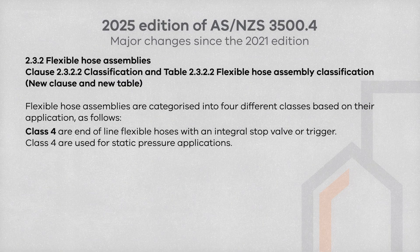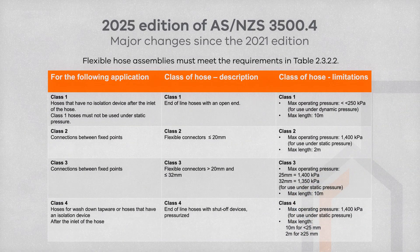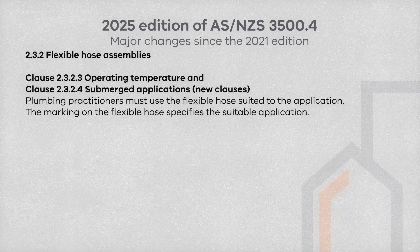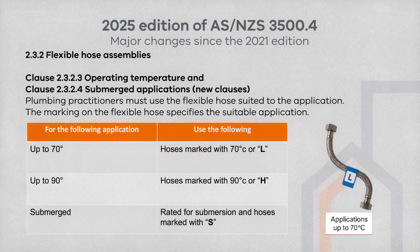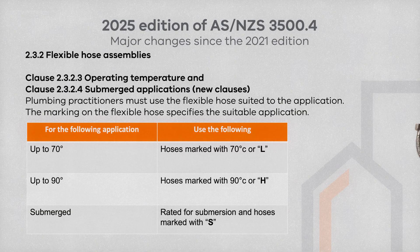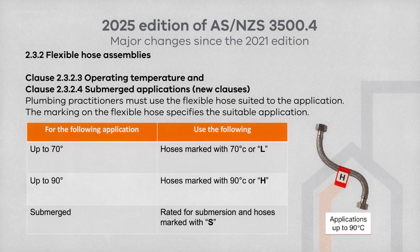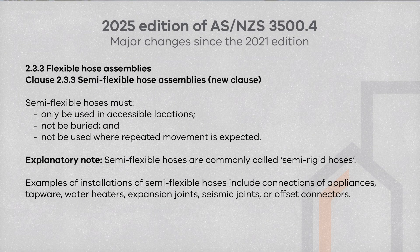Ensure the appropriate class of hose is used for the correct application. Classification Table 2.3.2.2 is again provided here, showing the requirements of flexible hose assemblies dependent on class, application and limitations. Just as in Part 1, there is a new Clause 2.3.2.3 regarding the operational temperature range of flexible hose assemblies, also covering submerged applications. Hoses must be marked with the appropriate temperature rating or the corresponding letter to suit the application. Semi-flexible hoses, commonly called semi-rigid hoses, are also covered in this section, and must meet the applicable requirements where selected for use.